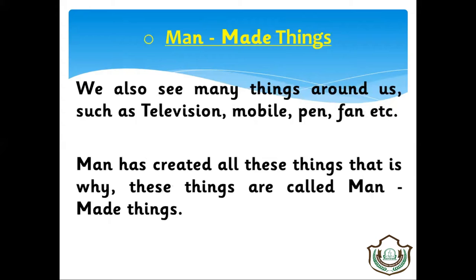Next topic is man-made things. What are man-made things? We also see many things around us such as television, mobile phones, pen, chair, computer. These all things are man-made things and they are also called machines. Man has created all these things — humans ne inko create kiya hai. That's why these things are called man-made things.